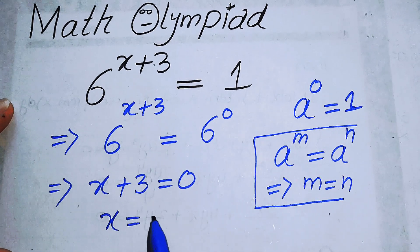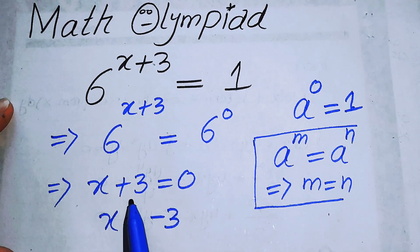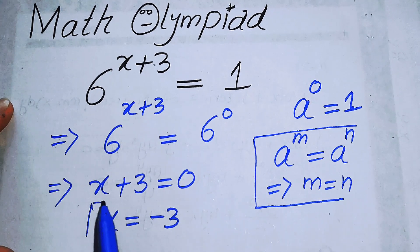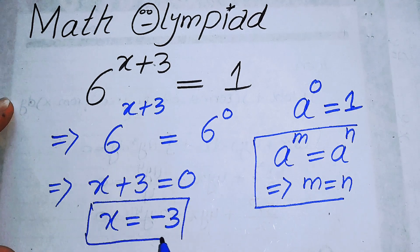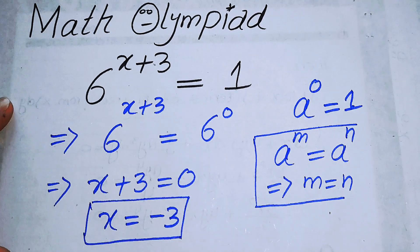x equals minus 3. Here it is plus 3, and when we take it to the right-hand side, it will become minus 3. And this is our final answer.